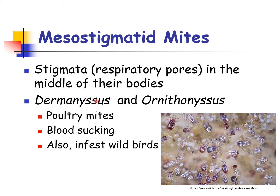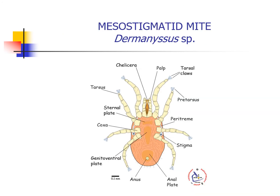These mites include the genus Dermanyssus and Ornithonyssus, which are also known as poultry mites. They are bloodsuckers and they also infest wild birds. This diagram shows the important anatomical parts of the Mesostigmata mites. Among the parts are the chelicera, the palp, the peritreme, the anus, the anal plate, and the stigma or stigmata, which serve as the respiratory pore of the mite. The stigmata are located between the coxae of the third and the fourth legs.